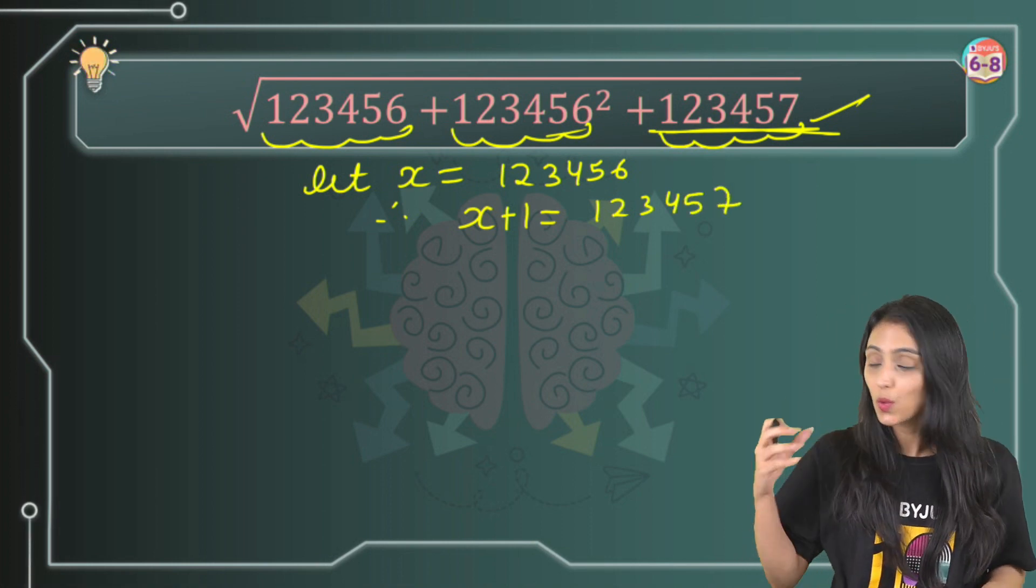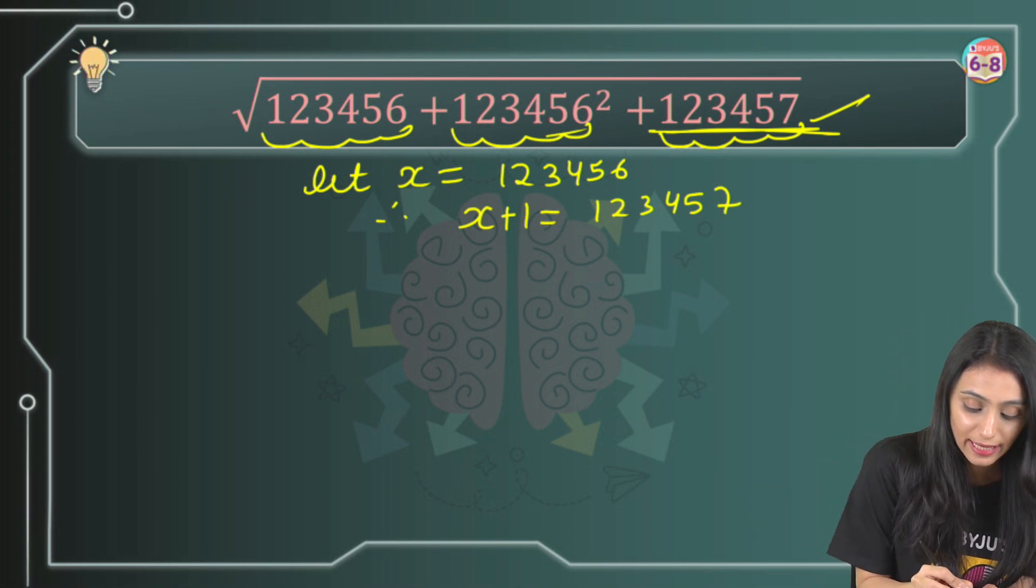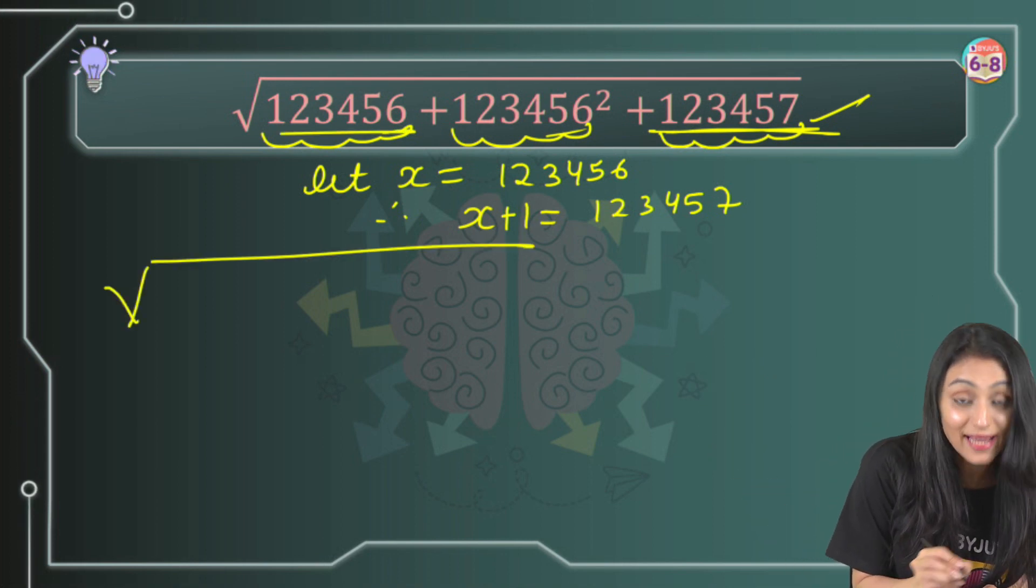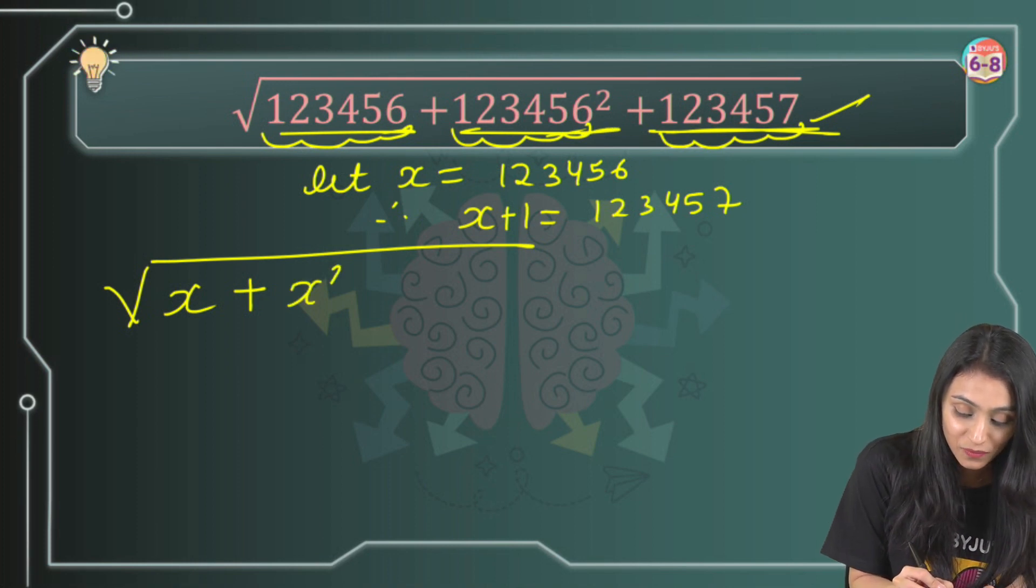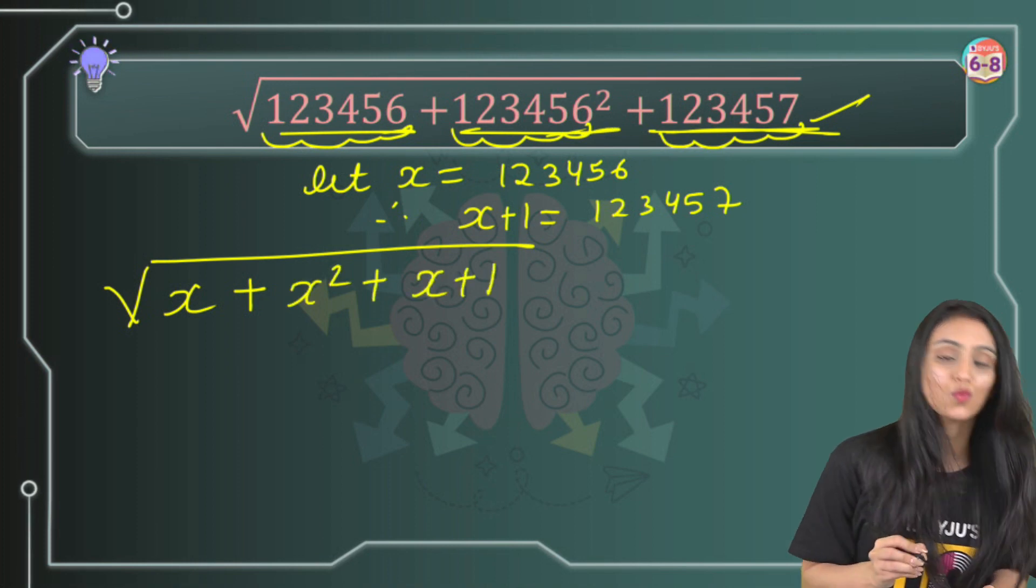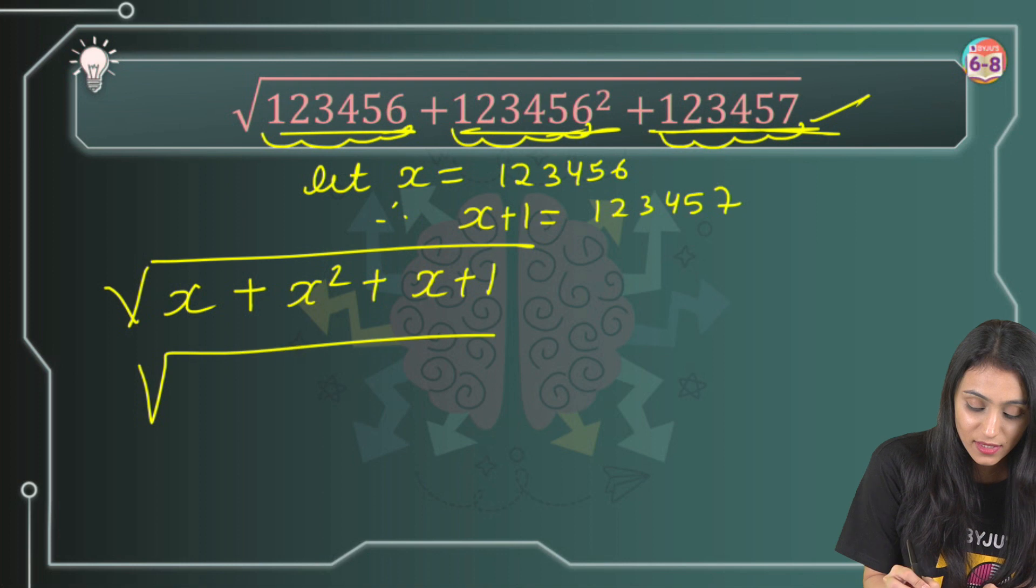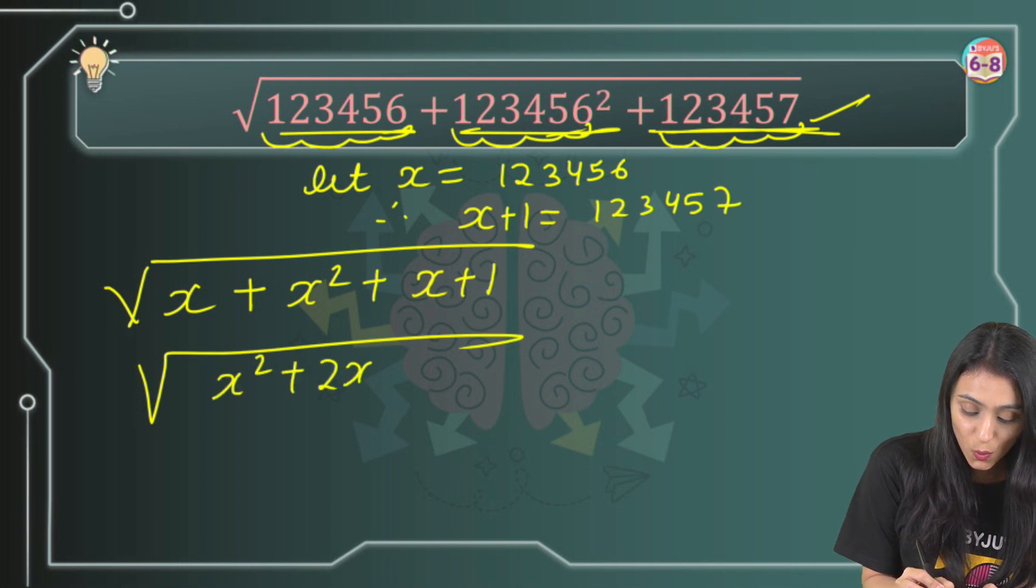Now I'm just going to substitute whatever I've assumed here in this question. So this is x, right? As we assume this is x. This is going to be x square. And another one is going to be x plus 1. So this becomes what? This is going to be x square plus 2x plus 1.